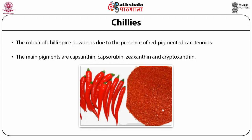Capsaicin is synthesized in the interlocular septum of chili pepper and is made from vanillylamine and 8-methyl-6-nonenoyl-CoA. In paprika, the volatile oil in the fruits ranges from 0.1 to 2.6%. The characteristic aroma and flavor of the fresh fruit is imparted by volatile oil.